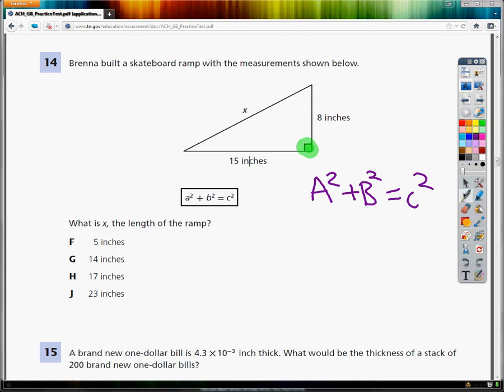So I'm going to plug in one of them, it doesn't even matter, 8 for A and then I have to remember to square it. Then I'm going to type in 15 for B. Once again, it doesn't matter. Then I'm just going to solve the equation.